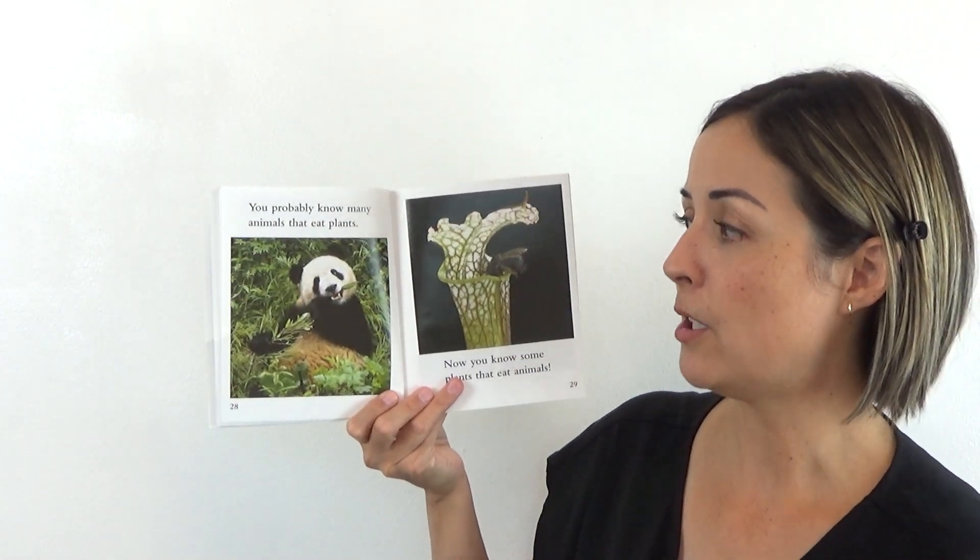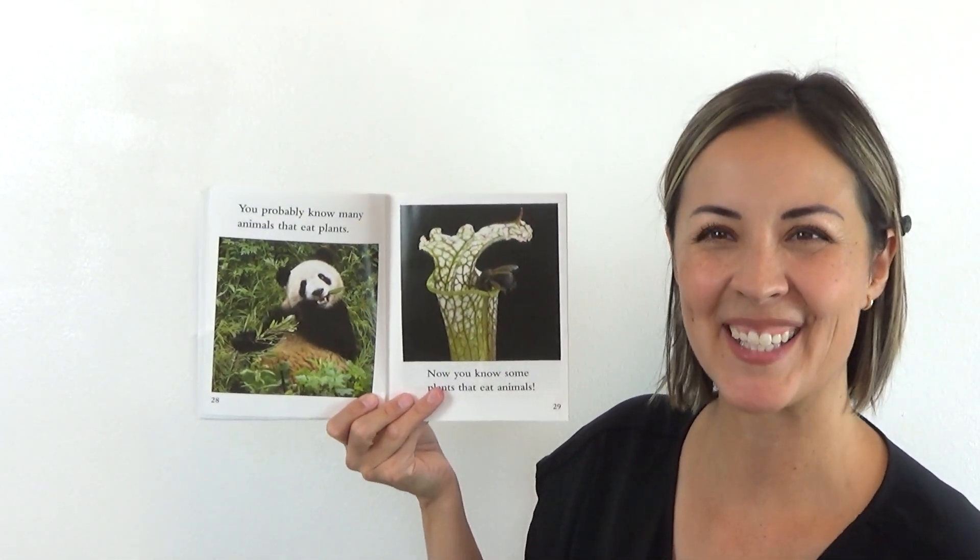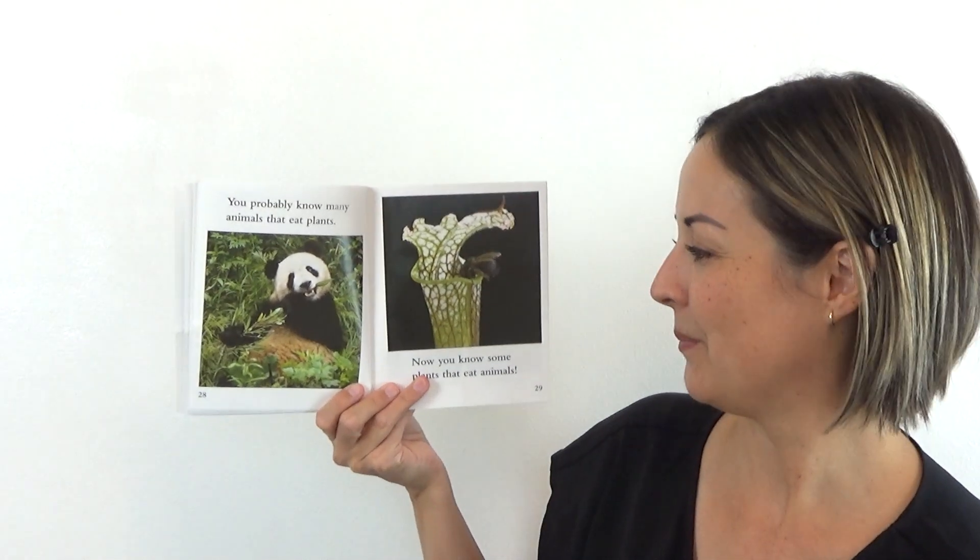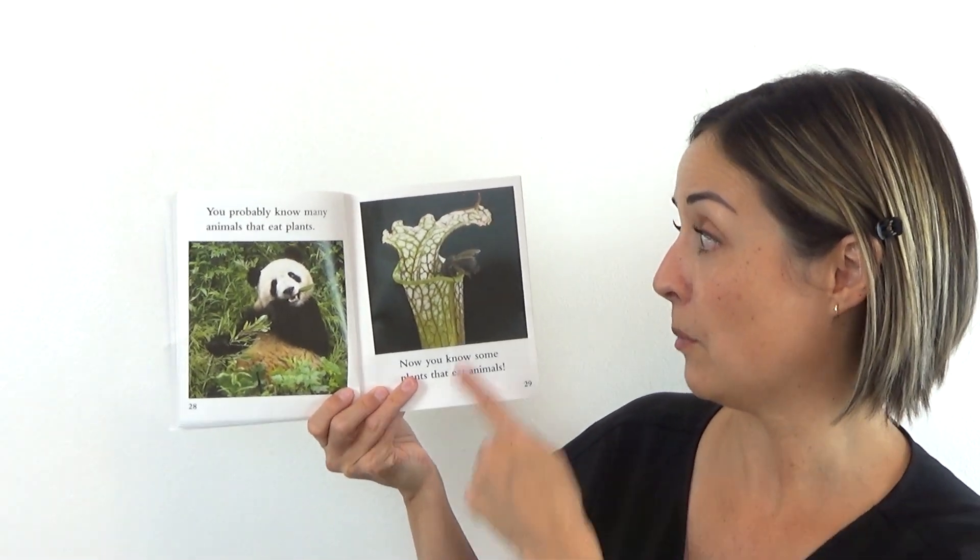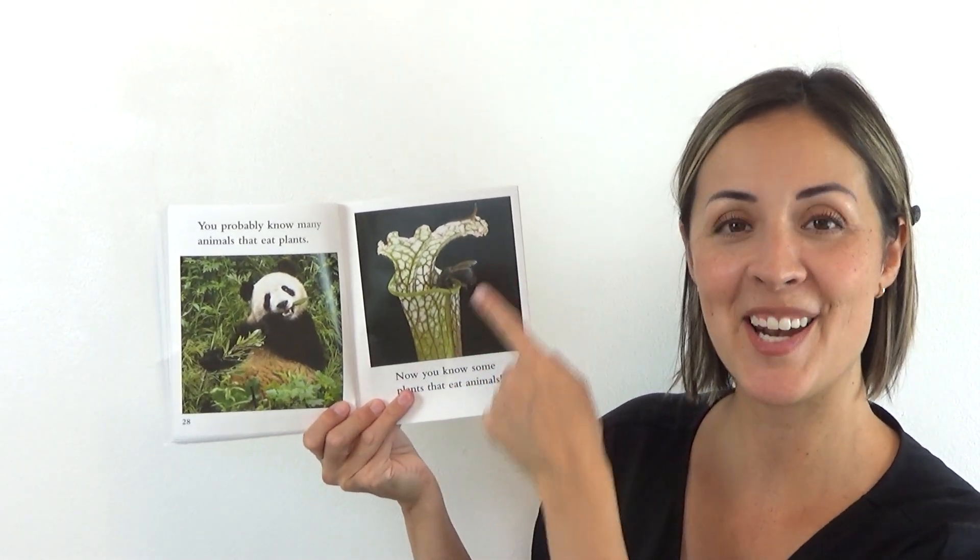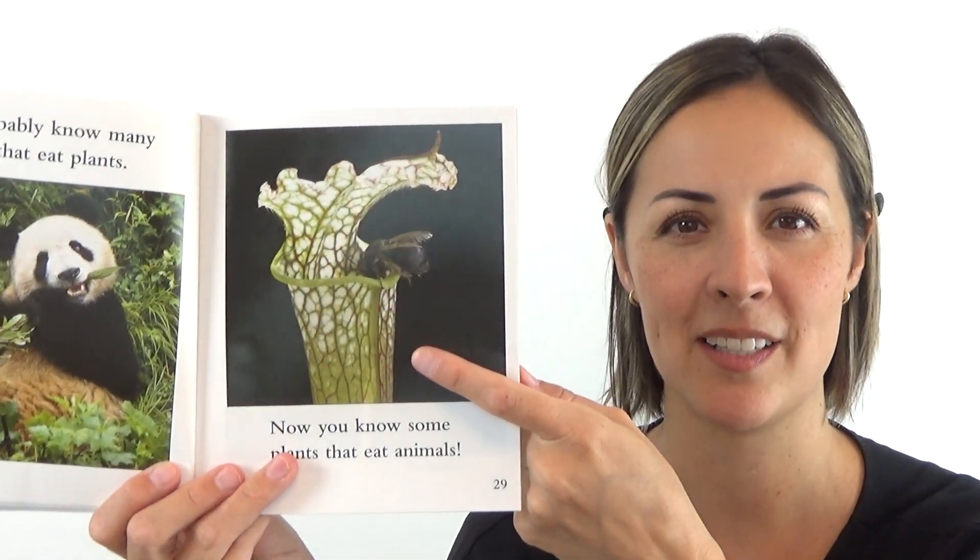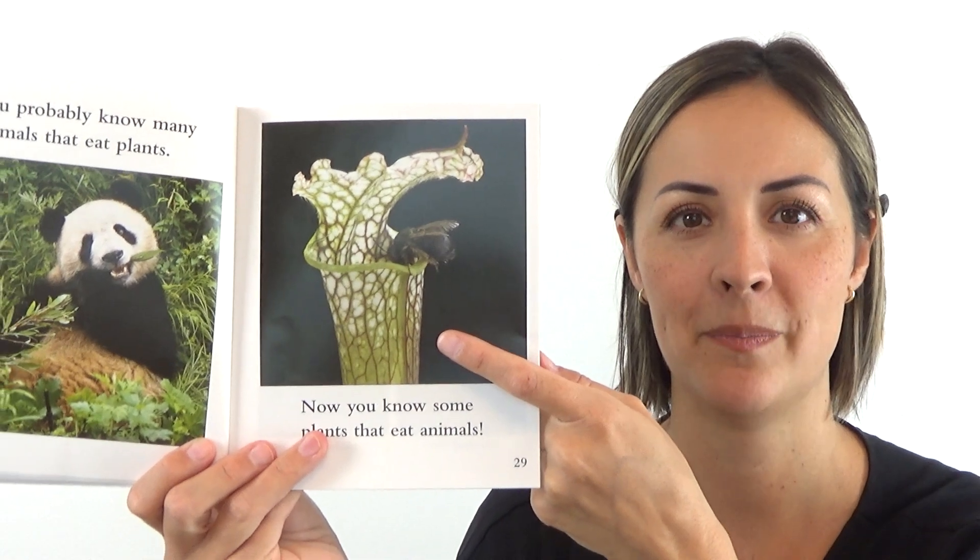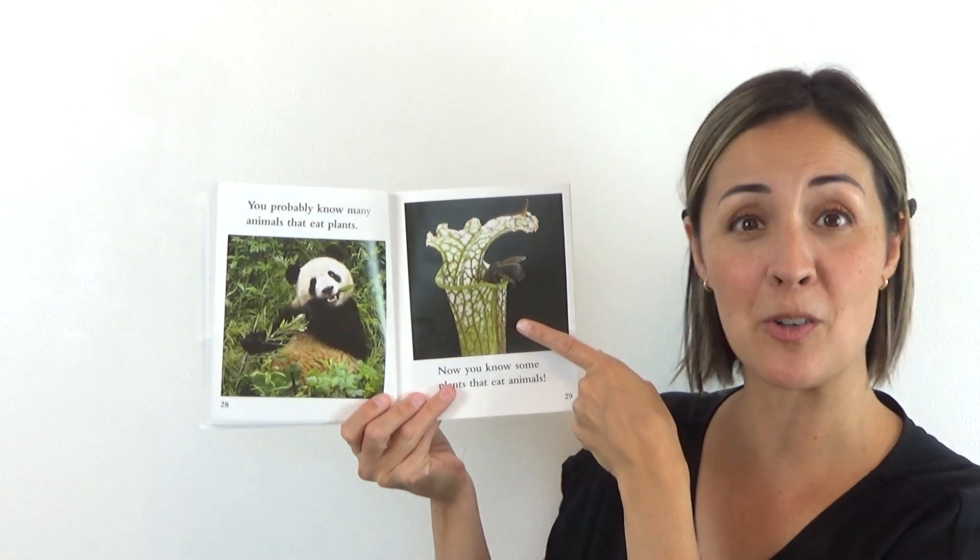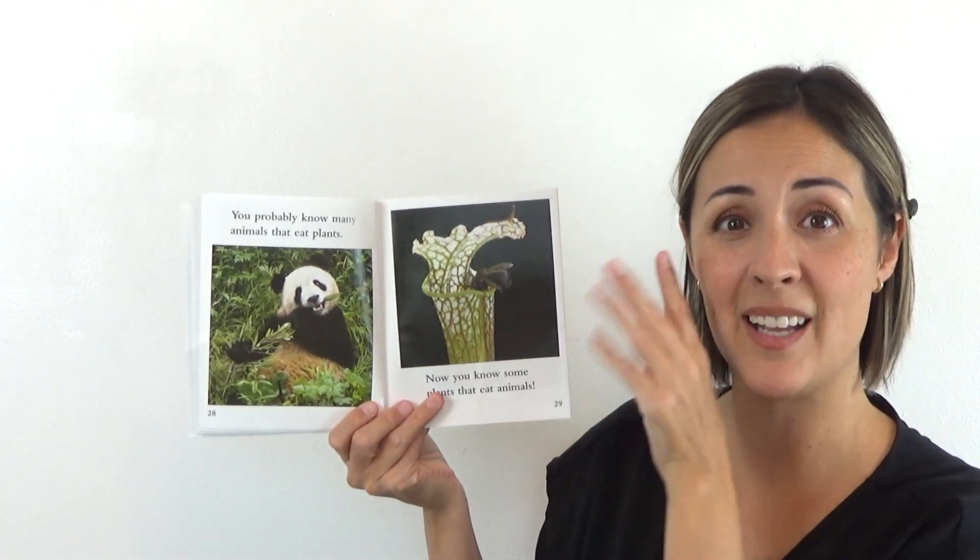You probably know many animals that eat plants like pandas eat bamboo. Now you know some plants that eat animals. Oh, and I'm guessing that that's a pitcher plant because it looks like a pitcher and the insect is about to crawl down to get the sweet liquid inside and get stuck.